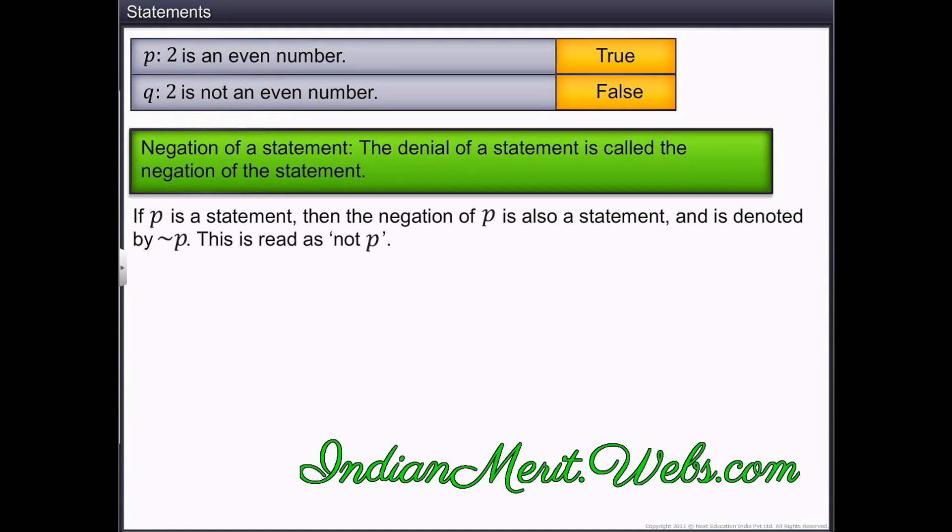If P is a statement, then the negation of P is also a statement, and is denoted by a symbol followed by the statement name. This is read as not P. If the truth value of P is true, then the truth value of not P is false and vice versa.